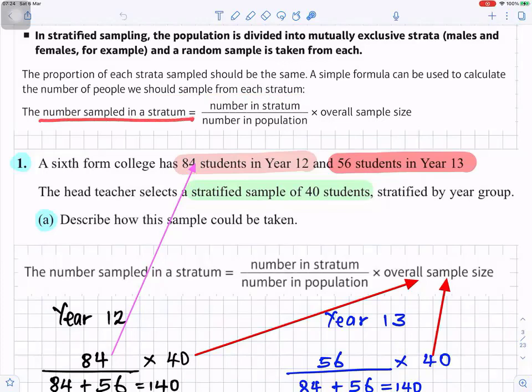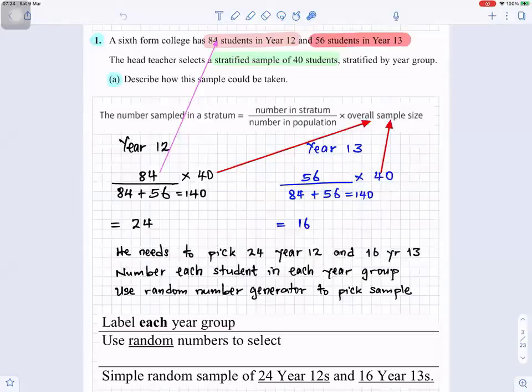The number sampled in a stratum is the number in stratum divided by the number in population times the overall sample size. This formula is very important to remember. For the sixth form college, we're going to use that formula. So 84 students in Year 12 - we're dealing with Year 12 first. That's Year 12, and there's 84 students in Year 12, divided by the number in the population. The total number is 84 students in Year 12.